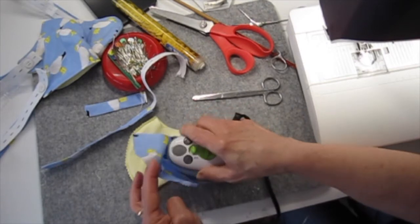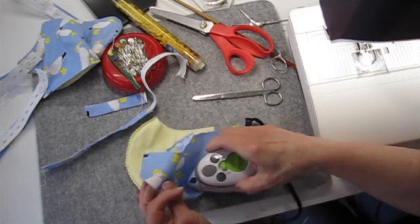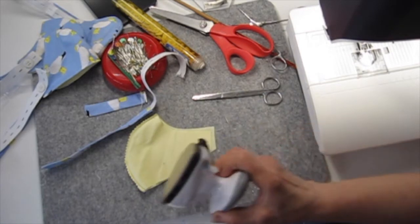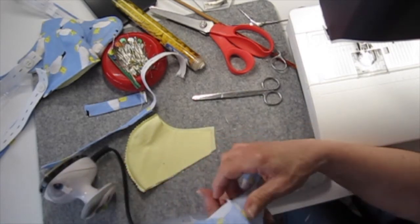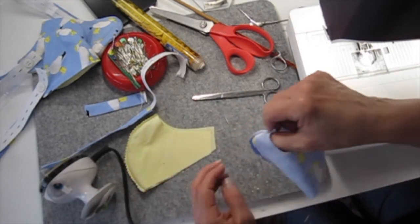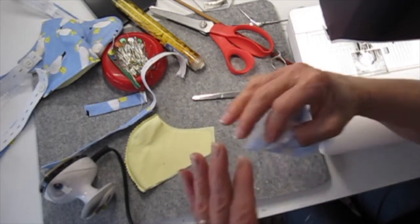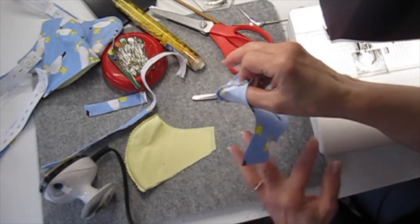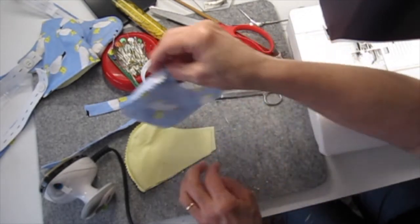And iron them both the same way. Sounds counterintuitive. But when we put these together, face to face, there'll be mirror images of each other. And that way, the seam allowances will nest, because they'll be in opposite directions. So now the nose piece goes in.